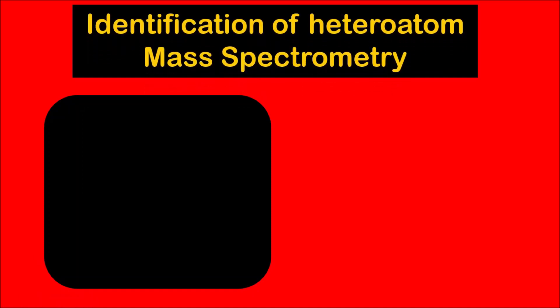Hello everyone, welcome to Chemazon Complete Chemistry. In today's video we are going to see one of the applications of analyzing mass spectrometry, that is to identify a heteroatom. We will see what exactly a heteroatom is, and then we will see how we can identify the heteroatom from a given mass spectrum.